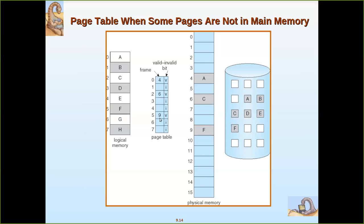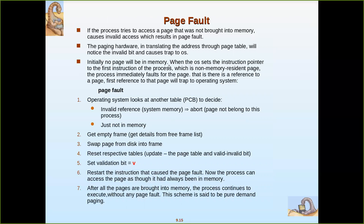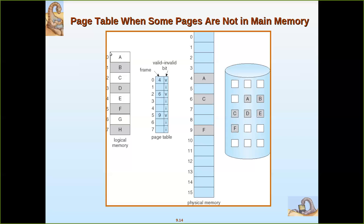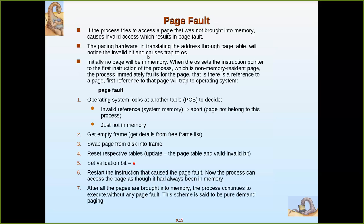Initially, no page will be in memory — the page table for this process will have all bits set to I. When the operating system sets the instruction pointer to the first instruction of the process, it is a non-memory result and the process immediately falls for a page fault because that page is not in main memory. So the page has to be brought to main memory. The first reference to the page will trap to the operating system.